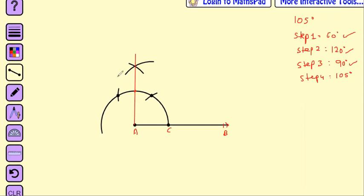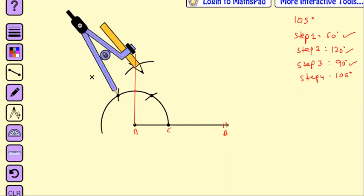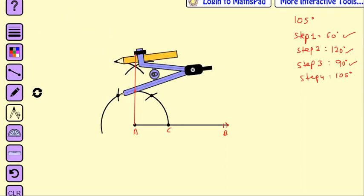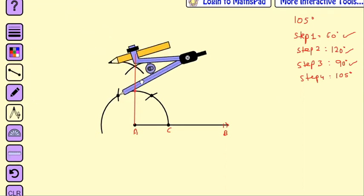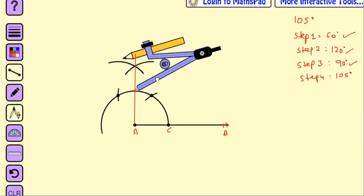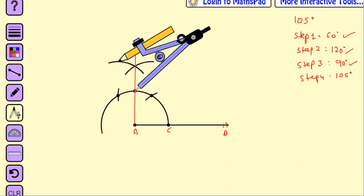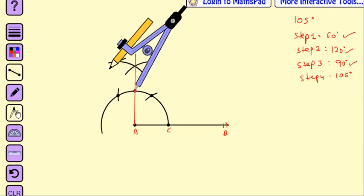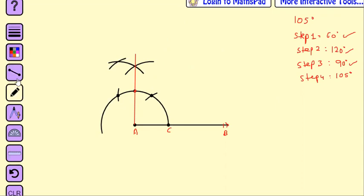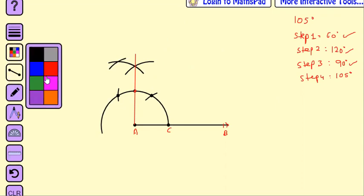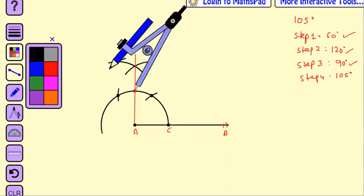So, my arc should be somewhere here. Let me just take the compass again. Let me just extend the line over this side a little bit and I will keep my compass again on 90 degree point. And yes, so this is my major line.